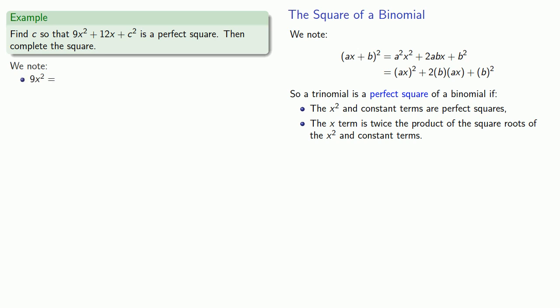So our x squared term, 9x squared, is a perfect square because it's the square of 3x. And our constant term is a perfect square because it's the square of c. Now we want to complete the square, which means that our x term has to be twice the product of the square roots of the x squared and constant term. So 12x has to be equal to 2 times 3x times c. And now we have an equation that we can solve for c. So 12x should be 2 times 3x times c. And now let's look at our equation. It says 12 times x is the same thing as 6c times x. And so that means we want 12 to be equal to 6c. And so c itself has to be equal to 2.